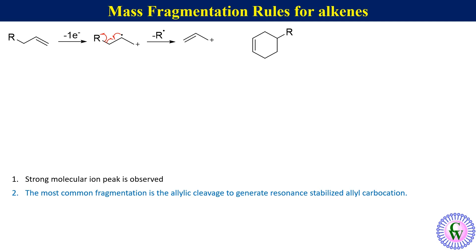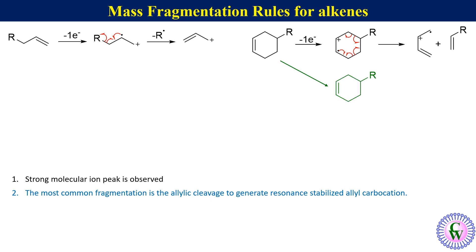Cyclohexene derivatives, upon electron bombardment, remove a pi electron to produce a molecular cation, which undergoes ring opening to produce a 1,3-butadiene radical cation and an alkene. This ring opening resembles the retro-Diels-Alder reaction. You can also draw the mechanism differently, where the molecular ion is drawn by just drawing the molecule and then putting an inverted L with radical cation.